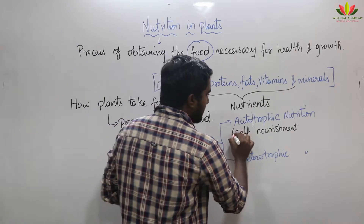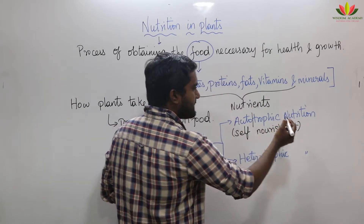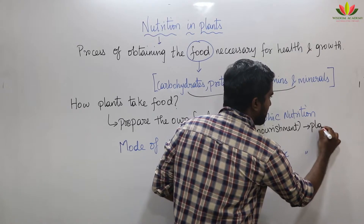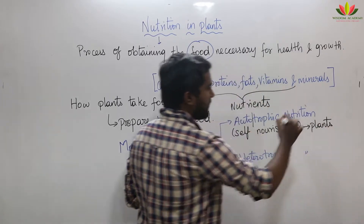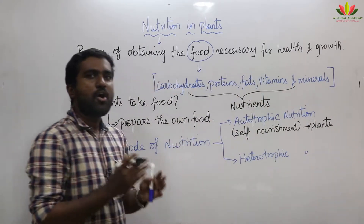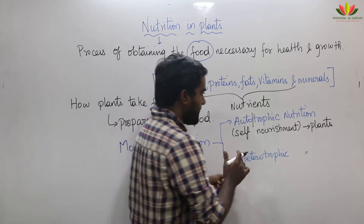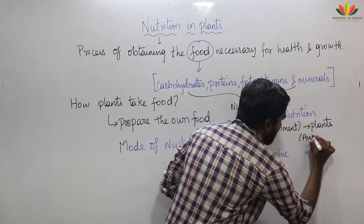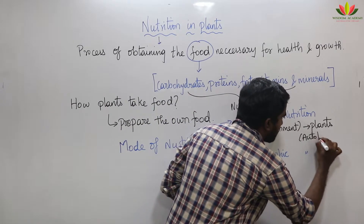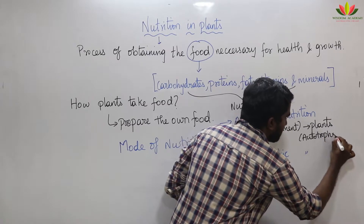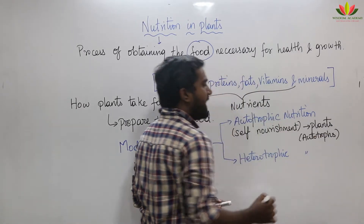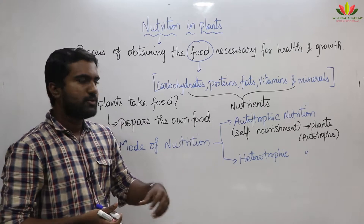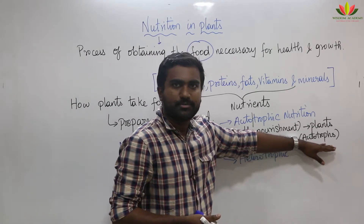If you do wish for self-nourishment, the example is plants. Plants will prepare their own foods, so plants are all called as autotrophs. An organism which prepares their own food is called an autotroph.